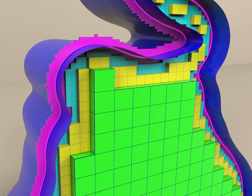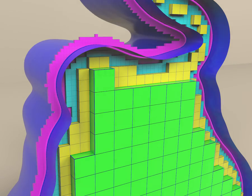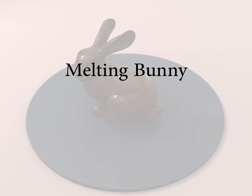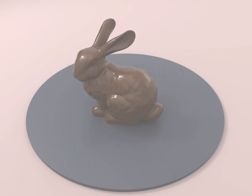Our adaptive viscosity discretization seamlessly handles changes in grid resolution. We can also simulate liquids with spatially varying viscosity. In this example, we melt a viscous bunny by pouring a hot liquid on top.